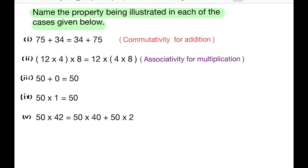Third question: 50 + 0 = 50. When 0 is added to any number we get the same number. For any whole number a, a + 0 = a. So 0 is called the additive identity for whole numbers.